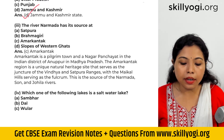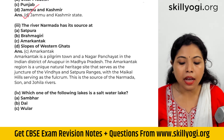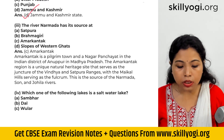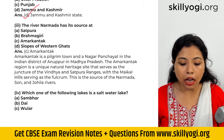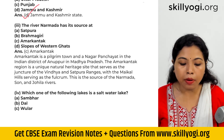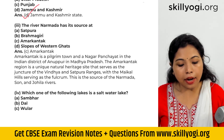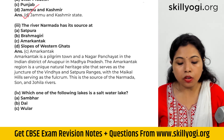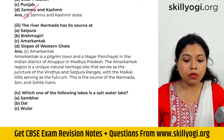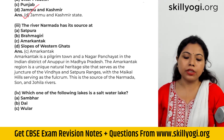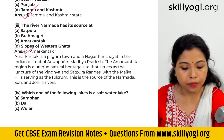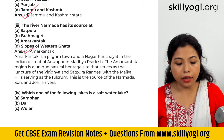Next question. The river Narmada has its source at: A) Shatpura, B) Brahmagiri, C) Amarkantak, or D) slopes of Western Ghats. The right option is C, Amarkantak.